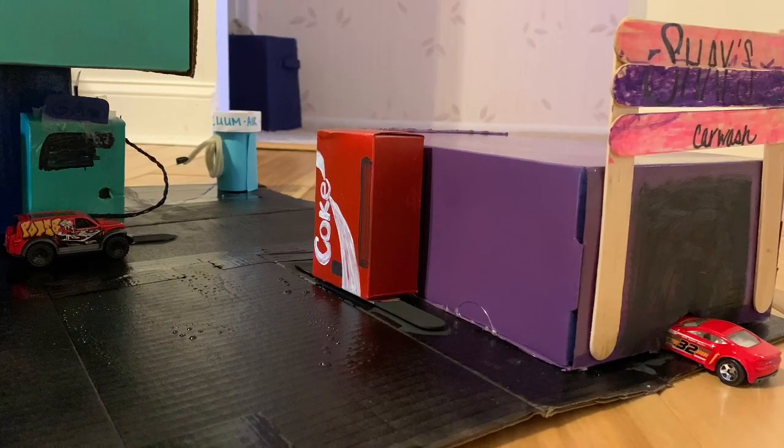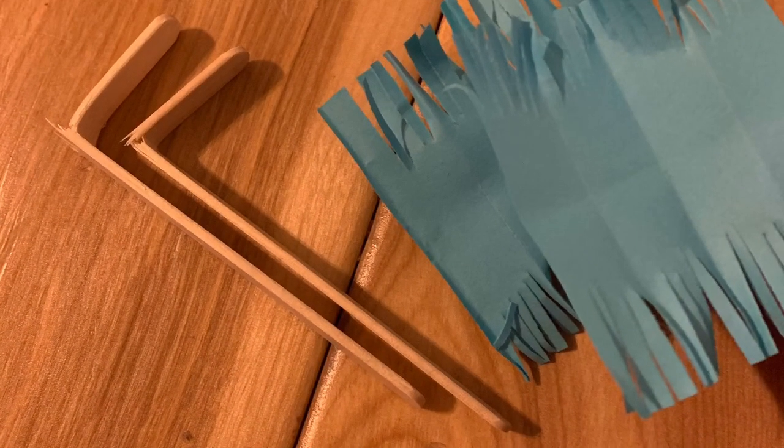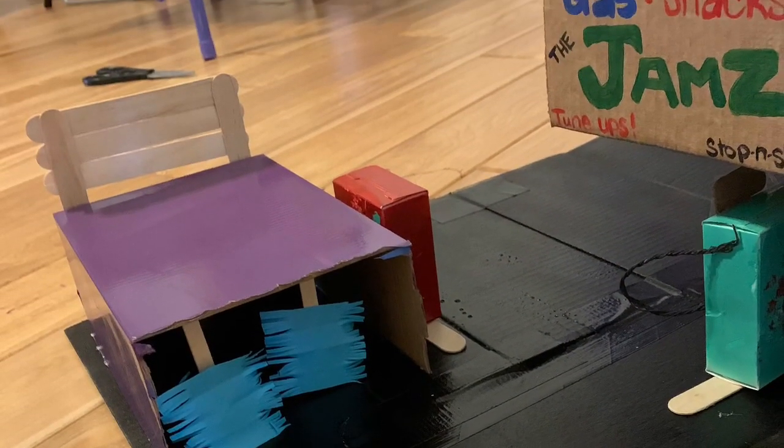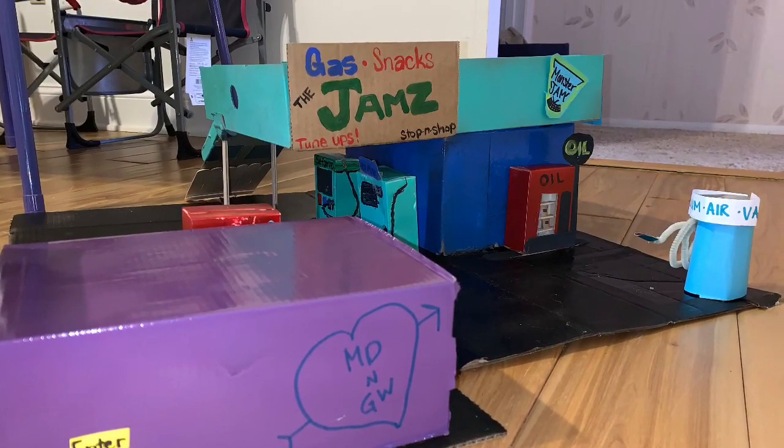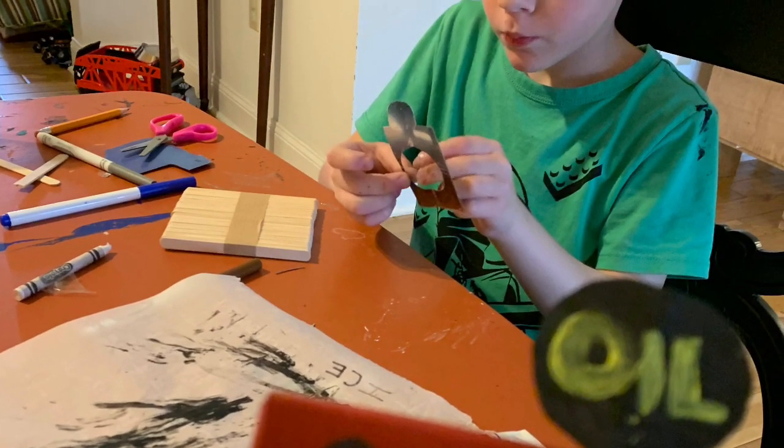This is Shay's car wash. Those are popsicle sticks for her sign. We use construction paper and popsicle sticks to make the brushes and hot glue gun them to the roof so they would look like they were hanging down ready to wash your car. A little graffiti on the outside and here's some more details.